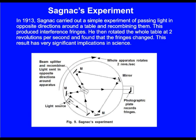In 1913, Sagnac carried out a simple experiment of passing light in opposite directions around a table and recombining them. This produced interference fringes.